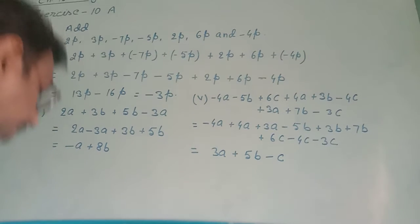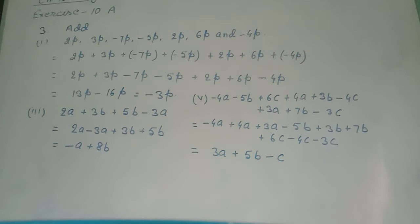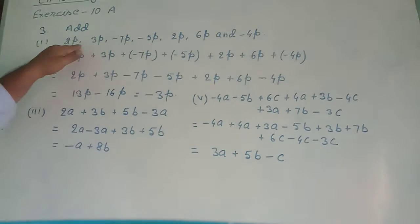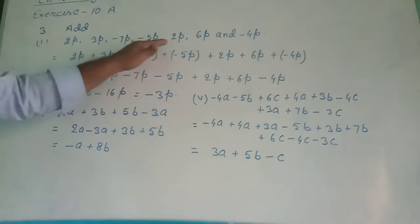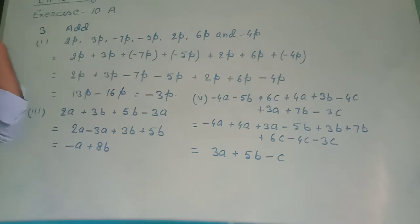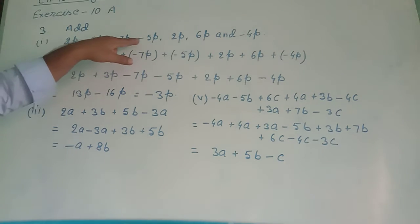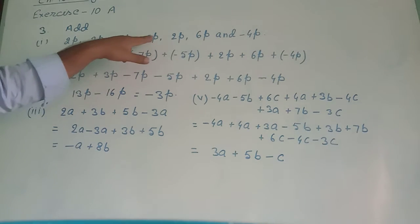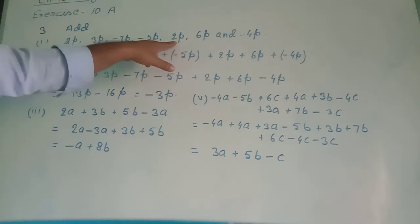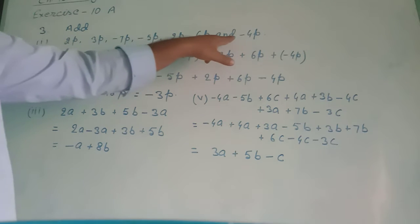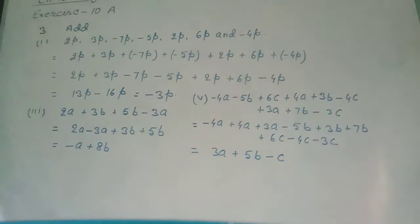Question number 3. We are asked to add these given algebraic expressions. Roman number 1: 2p, 3p, minus 7p, minus 5p, minus 2p, 6p, and minus 4p.